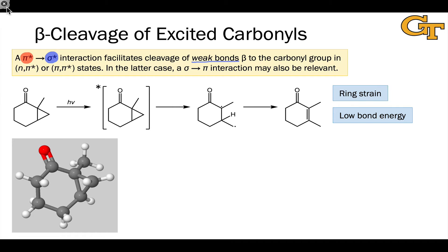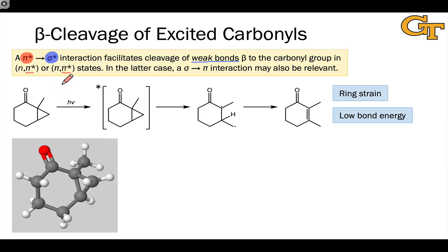Because the reaction involves the pi-star electron, we should expect in general that it can occur from both n-pi-star and pi-pi-star excited states, since the lower energy SOMO has nothing to do with this reaction. In the latter case, because the orbital alignment works out, it may be that a sigma-pi interaction is also relevant to the beta cleavage process, with the pi electron acceptor receiving electron density from the sigma bonding orbital of the beta bond that cleaves.